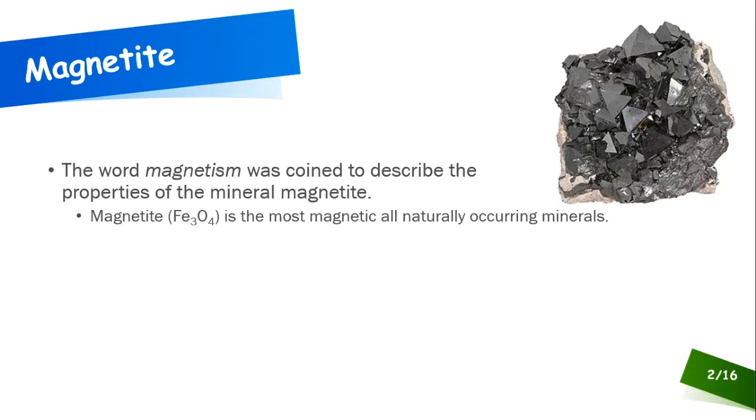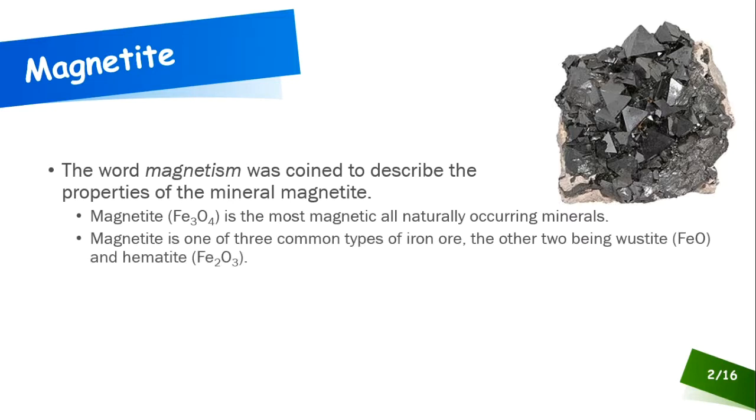Fe304, that means it's an oxide of iron, and that's where you typically find iron in nature. You find it as an oxide. Among iron oxides, there's two other types of iron ore that are oxides, one being woustite, which is FeO, and the other being hematite, which is the most common form of iron ore, Fe203.